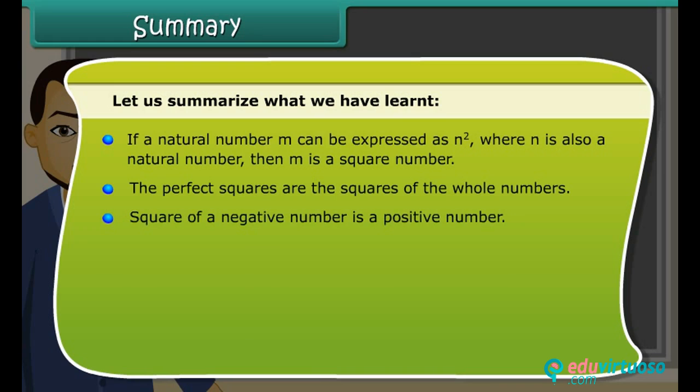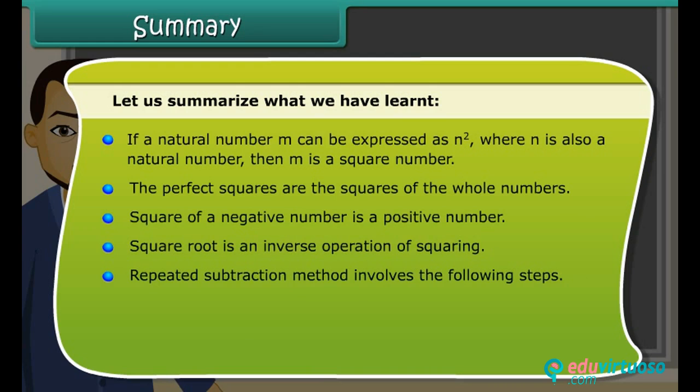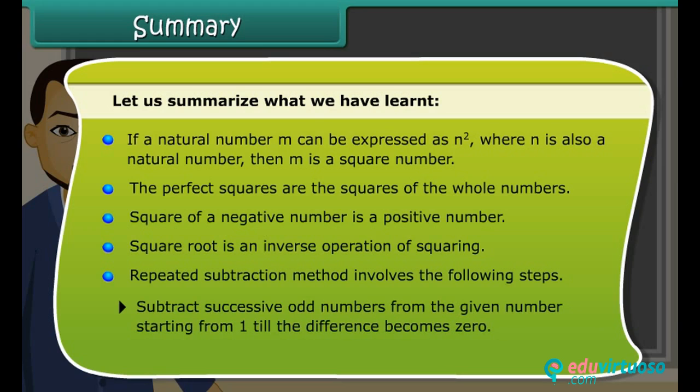Square of a negative number is a positive number. Square root is an inverse operation of squaring. Repeated subtraction method involves the following steps: subtract successive odd numbers from the given number starting from 1 till the difference becomes 0. Count the number of steps it took to get the difference as 0.